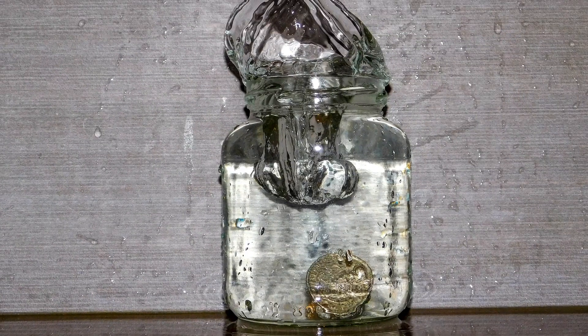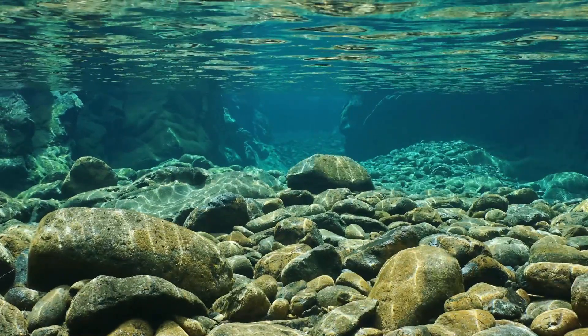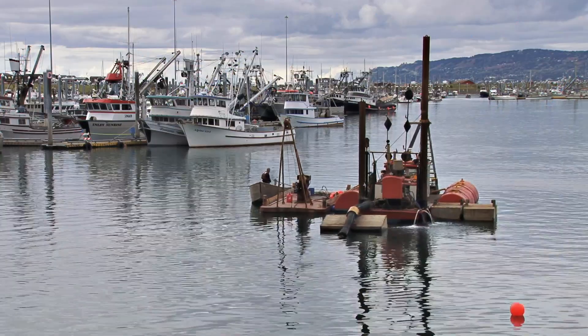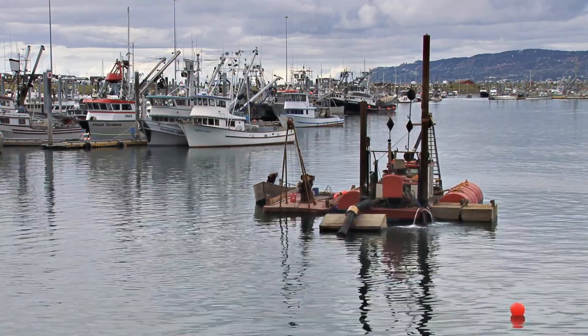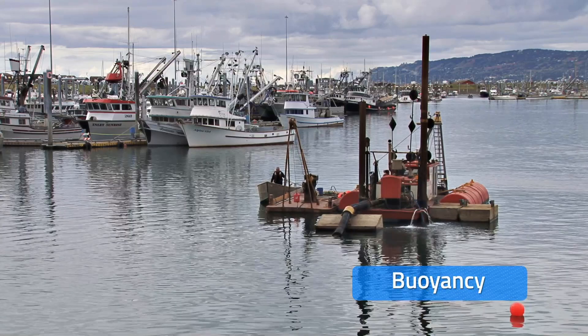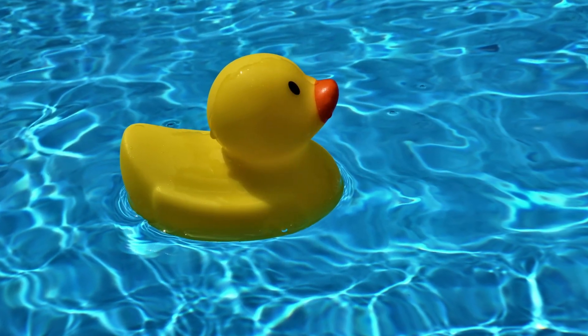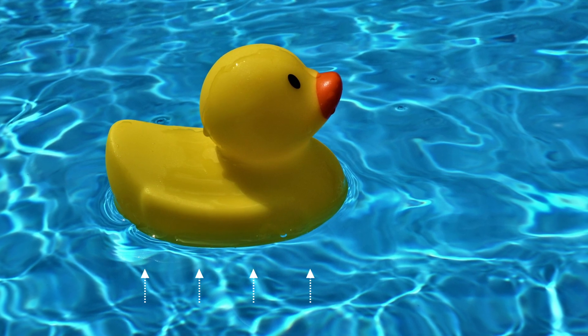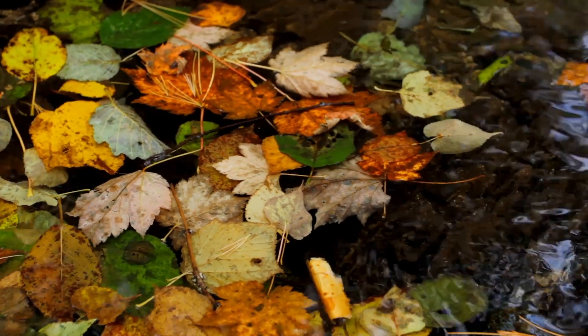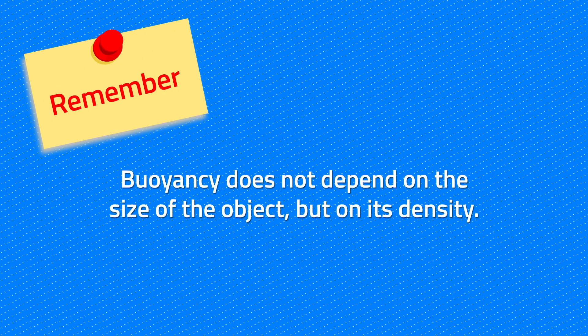Try to drop a coin or a small rock in a bowl of water — see what happens? There are also materials that float or rise to the surface of a liquid. This property is called buoyancy. The buoyancy of a material is the result of the upward force exerted by the liquid, just like these leaves. Remember, buoyancy does not depend on the size of the object, but on its density.